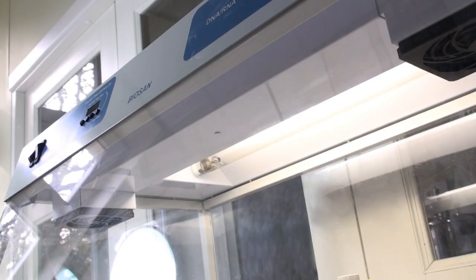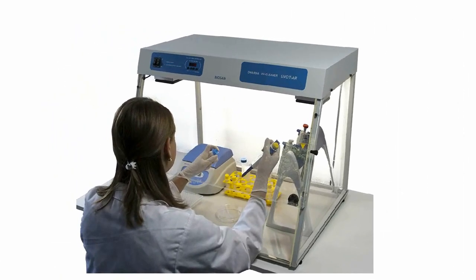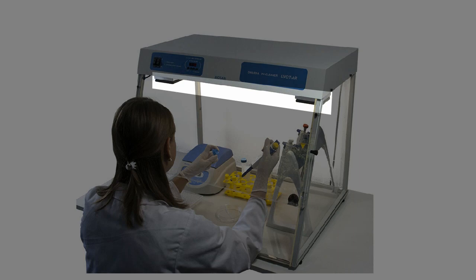A daylight lamp provides proper illumination of the working surface. UV cabinets are equipped with a flow-type bactericidal UV cleaner recirculator AR.